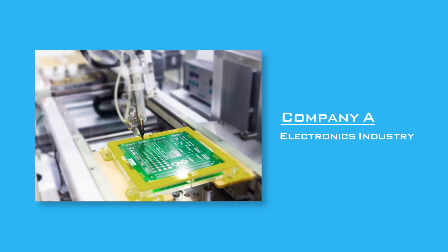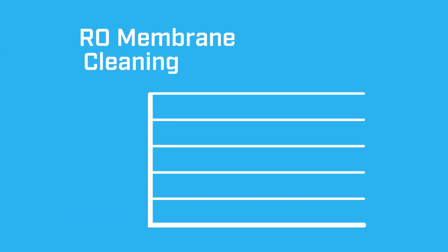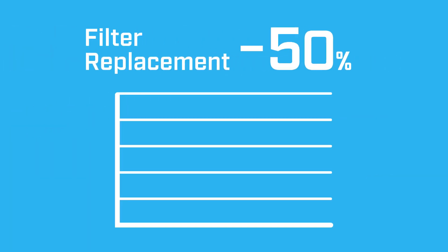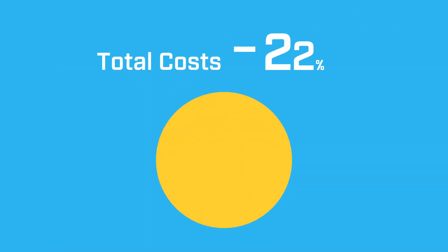At Company A, applying the Kuriverter IK110 resulted in an 80% reduction in the frequency of RO membrane cleaning, a 50% reduction in the frequency of cartridge filter replacement, and a 22% reduction in total costs.